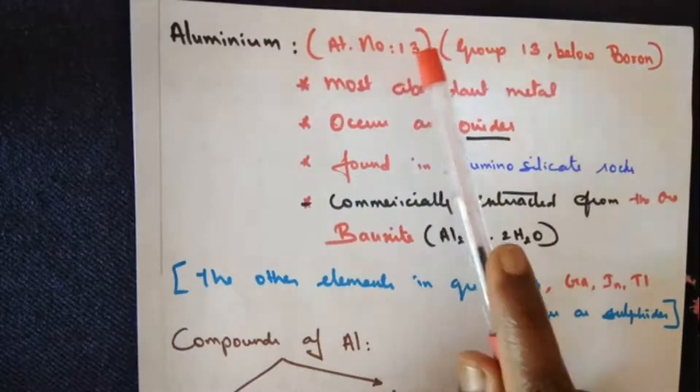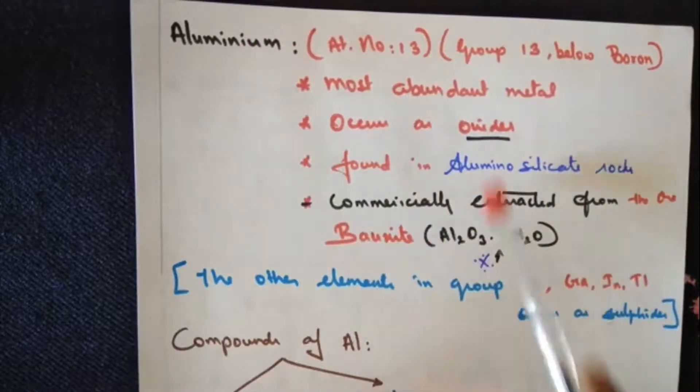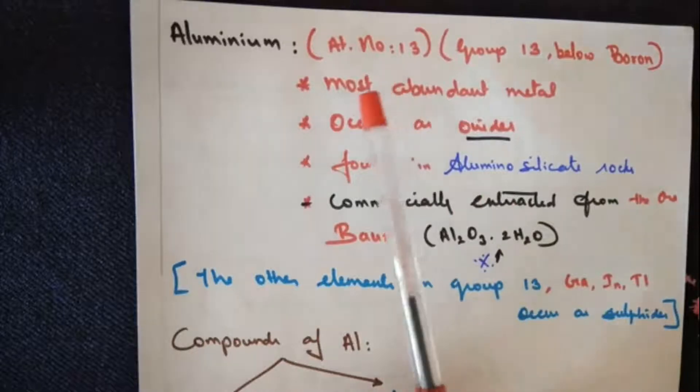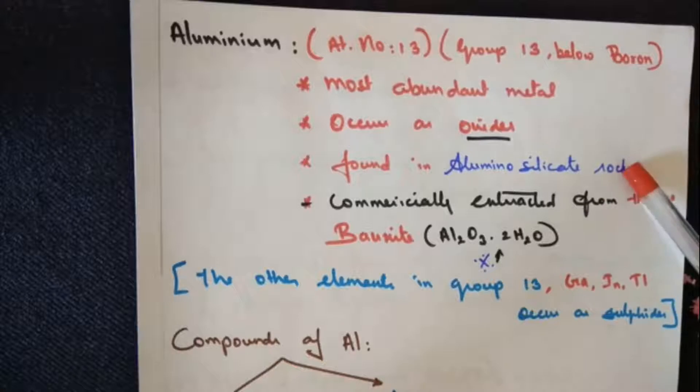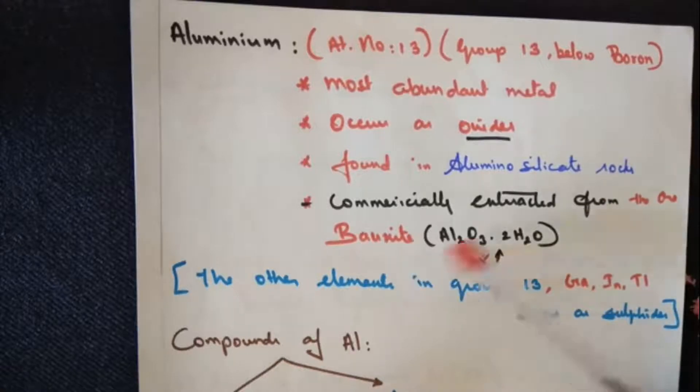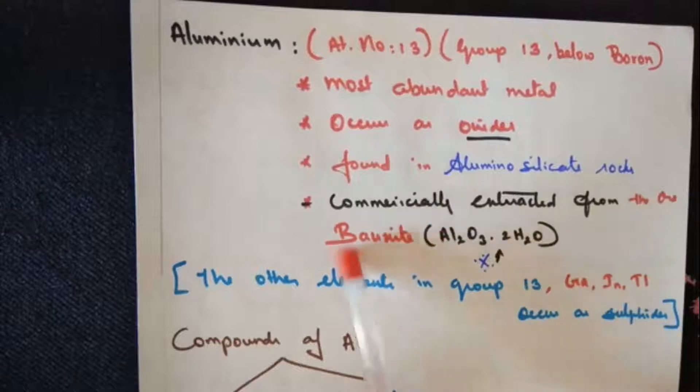Atomic number is 13. It is one of the most abundant metals on earth's crust, occurs mostly as oxides, and is found in aluminosilicate rocks and in bauxite ore. Commercial extraction is derived from bauxite ore.